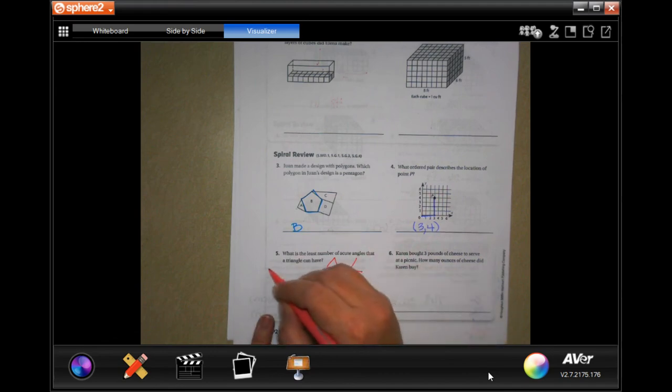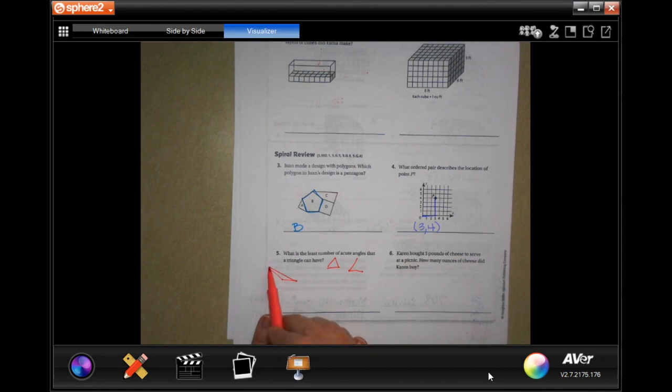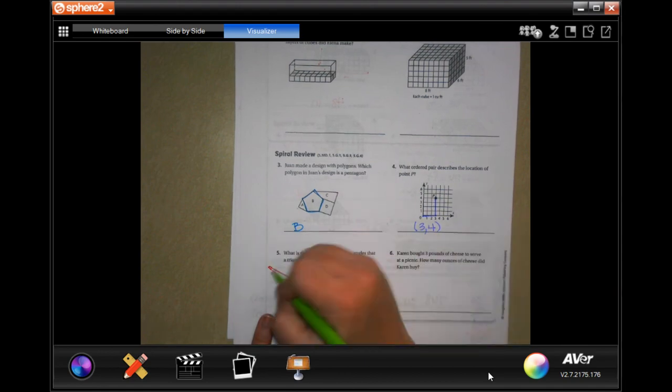Well, maybe if we did something like that—this is 90 degrees, this is less than 90 degrees, and this is less than 90 degrees, but this is way more than 90 degrees.